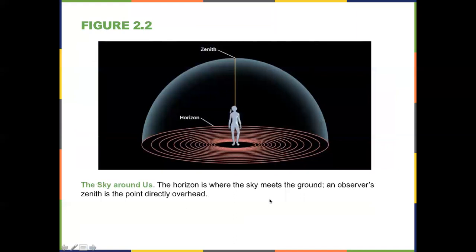Wherever you are, directly overhead is your zenith. Think about looking straight up — that is your zenith, and that is actually 90 degrees from the horizon. If you take the zenith and go all the way to the horizon and then straight across, that's a right angle, 90 degrees. It's also 90 degrees in every direction. So the horizon is at zero, the zenith is at 90, and the sky overhead is entirely 180 degrees. The ground prevents you from seeing the other 180 degrees underneath. Wherever you are, you have a zenith directly overhead and a horizon 90 degrees from the zenith.